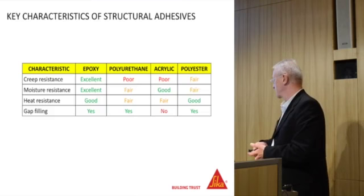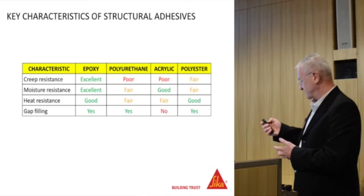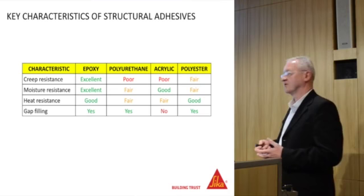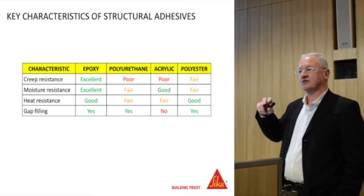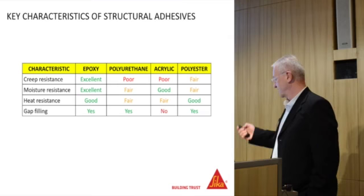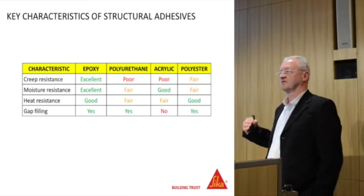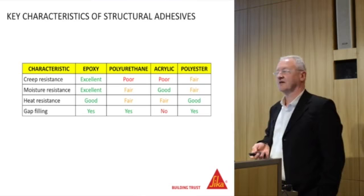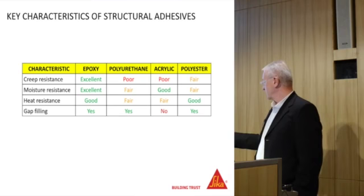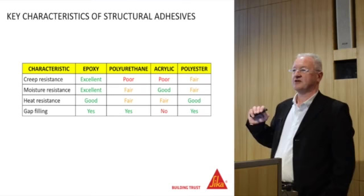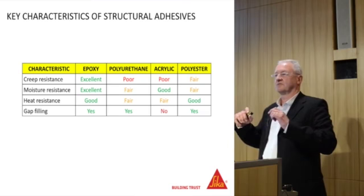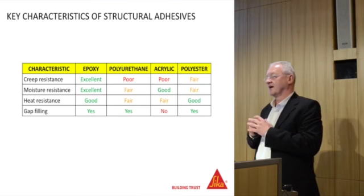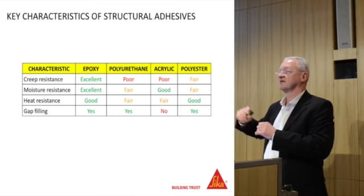The key things Professor Mays looked at for structural adhesives specifically for steel plate bonding were: first, creep resistance — once applied under stress you don't want creep as it would cause loss of stress transfer in the composite. Moisture resistance was also important, particularly for bridges in marine or wet environments given the British climate. Heat resistance was needed — bridges can get quite high temperatures and internal processes can reach 80–90 degrees. And the adhesive also has to be gap-filling, since concrete can be quite undulating and you need an even bond line between the steel and the concrete.